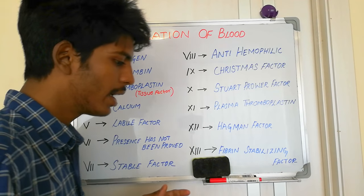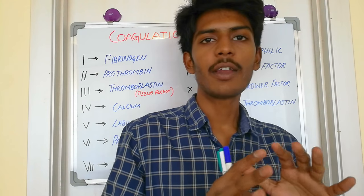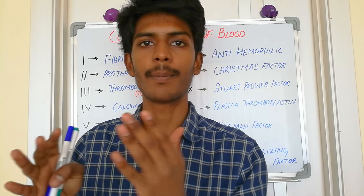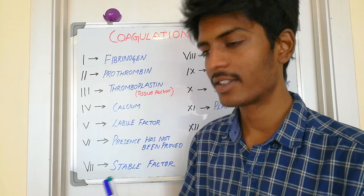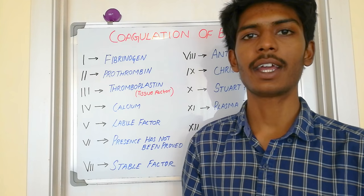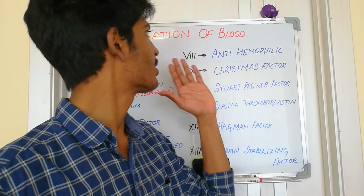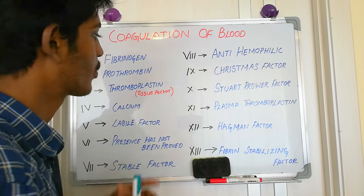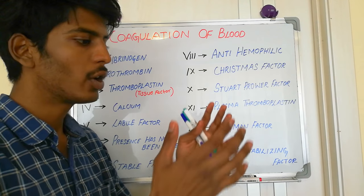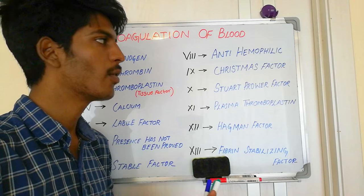When your blood vessel ruptures, there are three stages in which blood flow is stopped. The first stage is vasoconstriction, the second stage is platelet aggregation, and the third stage is coagulation or formation of the clot. In this video we are talking about the formation of the clot.